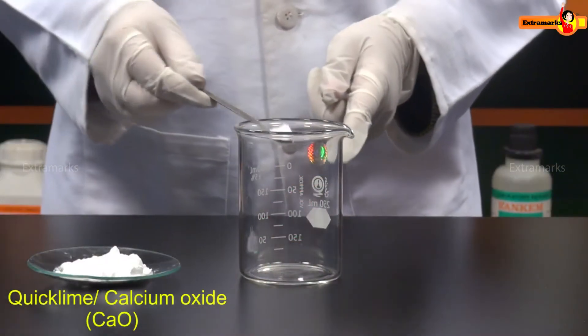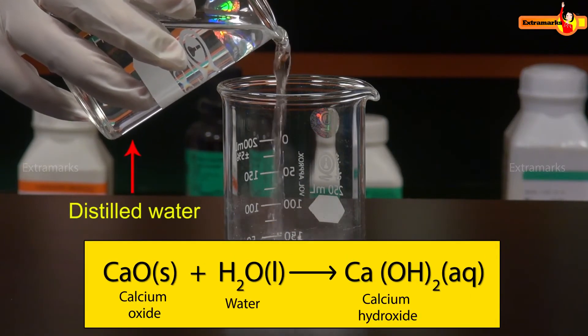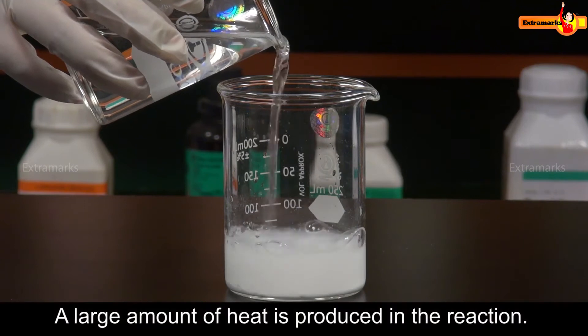For this, take small amount of quick lime in a beaker. Now, slowly pour distilled water into the beaker. Notice, a large amount of heat is produced in the reaction.